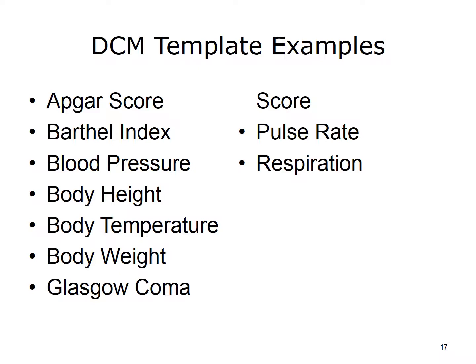DCMs are balloted and a repository is being set up to include normative DCMs. Details about these DCMs can be found on the HL7 website. Examples include APGAR score, Barthel index, blood pressure, body height, body temperature, body weight, Glasgow coma score, pulse rate, and respiration.